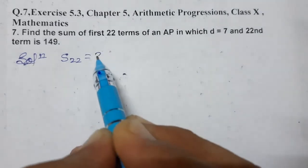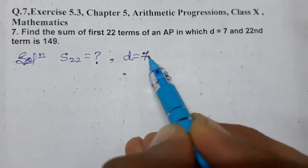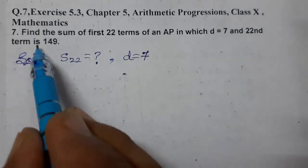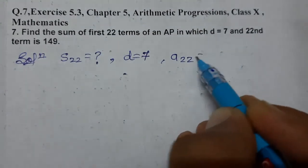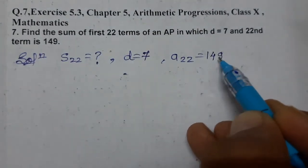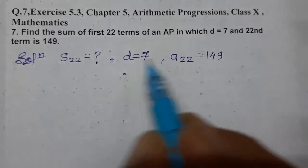In which d is given as 7, and the 22nd term is 149, so a₂₂ = 149. To find S₂₂, we first need to find the first term a from the given information.